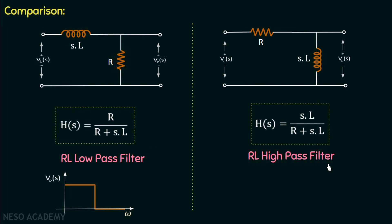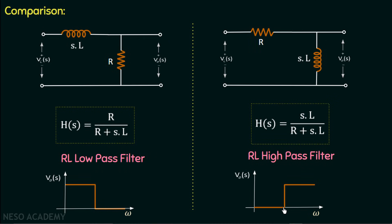The filtering characteristics of the RL high pass filter show that for low frequency the inductor behaves as a short circuit and output is zero, while for high frequency the inductor behaves as an open circuit and output is non-zero. The frequency at which the output changes from zero to non-zero is called the critical frequency; for the high pass filter it is the minimum frequency. For the RL low pass filter, the critical frequency is the maximum frequency at which the output becomes zero. The position of the inductor plays an important role: measuring output across the inductor gives a high pass filter, while measuring across the resistor gives a low pass filter.